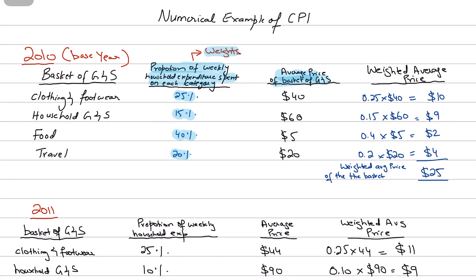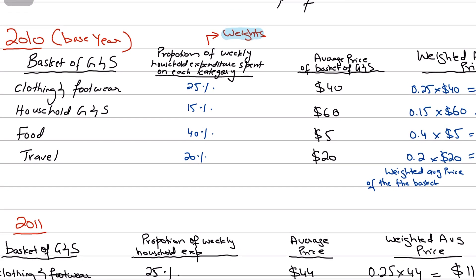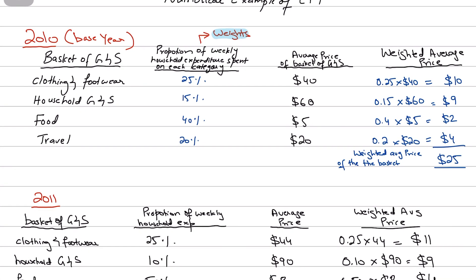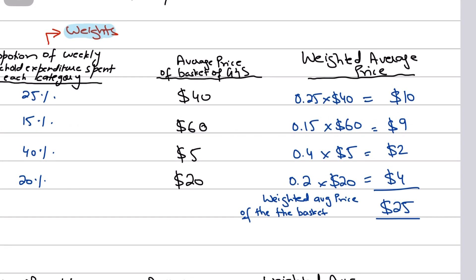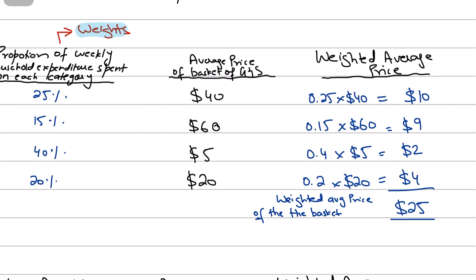We have the average prices of the basket of goods. We don't simply add up the average prices — instead we calculate the weighted average price by multiplying the weights by the average prices. So 0.25 times $40 gives you $10; 15% of $60 gives you $9; 0.4 times $5 gives you $2; and 0.2 times $20 gives you $4.